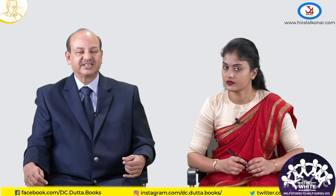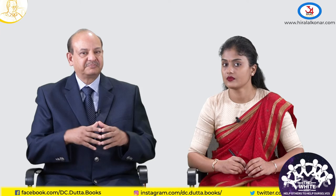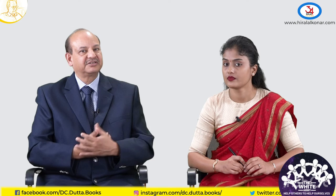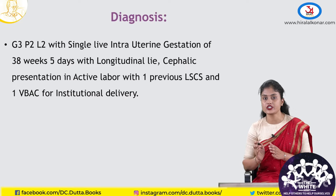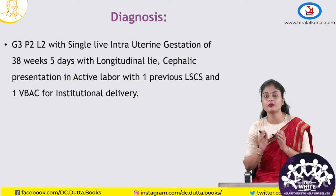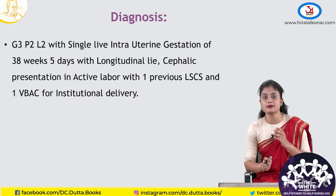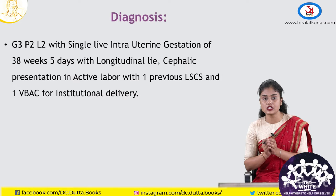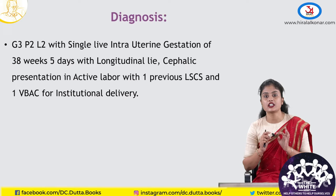If we plan to take her up for trial of labour, what are the prerequisites? For TOLAC, it should always happen in an institute where an obstetrician, neonatologist, and anaesthetist are available 24/7, with a blood bank and availability of blood and blood products. Consent of the patient is mandatory. The patient should have cephalic presentation, no classical or upper segment caesarean, not more than 2 previous caesarean sections, and no cephalopelvic disproportion with the present baby.